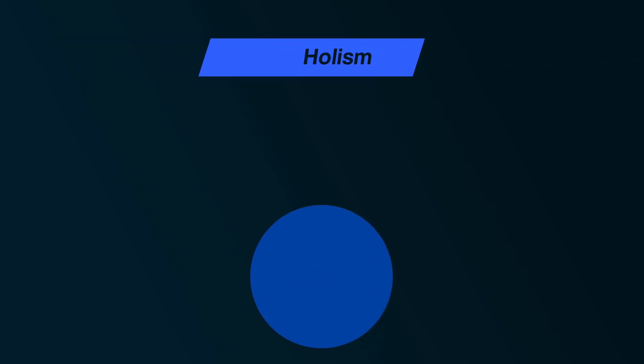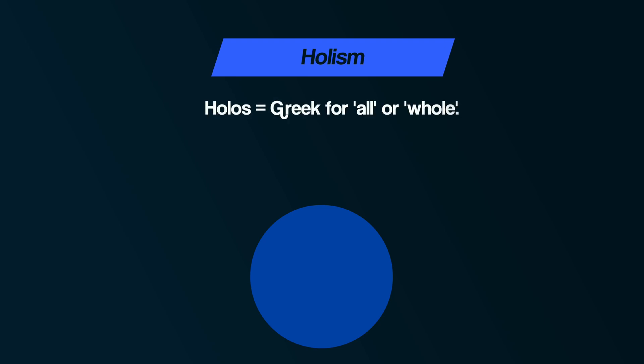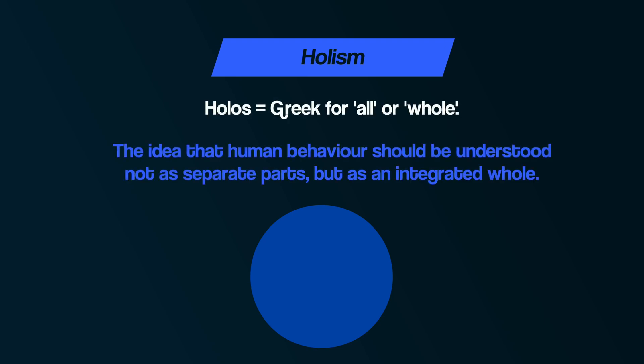Holism comes from the Greek word 'holos,' which means all or whole, and is the idea that human behavior should be understood not as separate parts but as an integrated whole. If you want to understand human behavior, says the holistic view, you need to do more than simply focus on the individual parts on their own — it's more important to consider how all the parts work together.